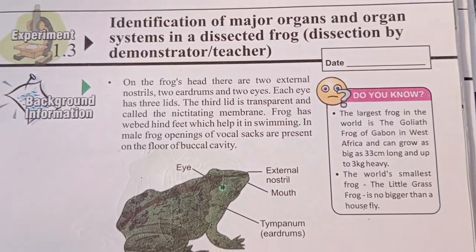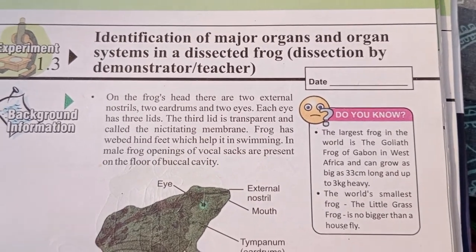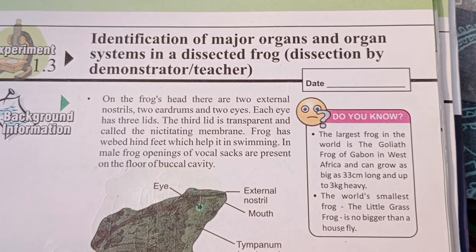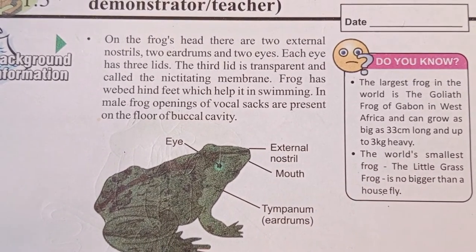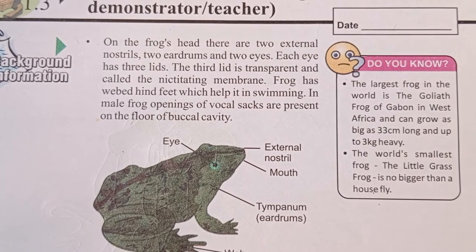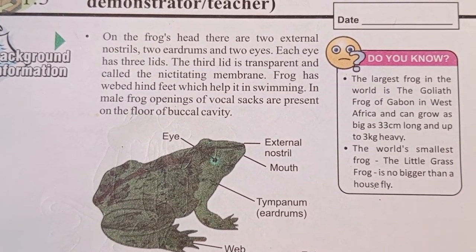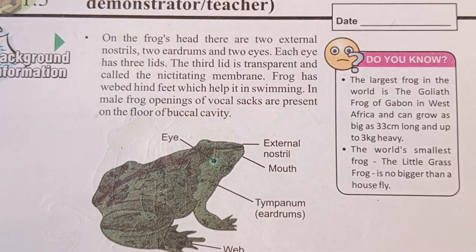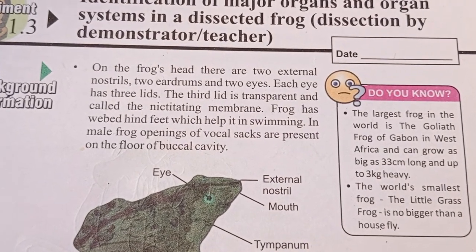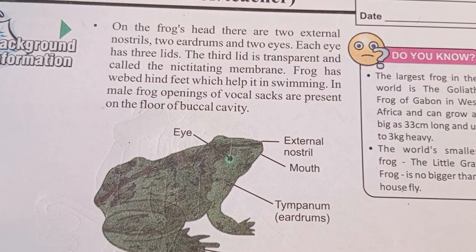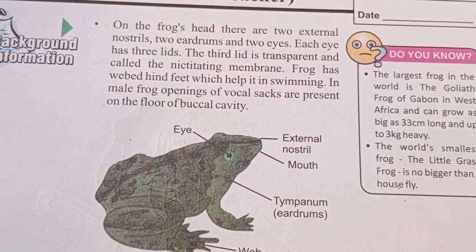Identifying major organ and organ systems in a frog. On the frog's head there are two external nostrils, two eardrums, and two eyes. Each eye has three eyelids; the third eyelid is transparent and called the nictitating membrane.